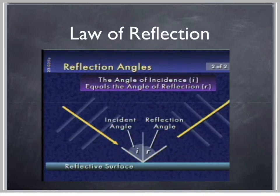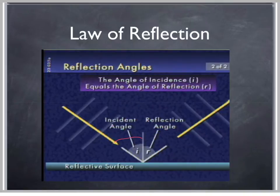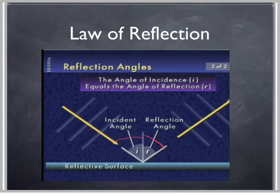We drew in the angle that the incident waves make with the normal, called the incident angle, labeled I. In the same way, we measured the angle that the reflected waves make with the normal, called the reflected angle. And so we got the law of reflection, which simply says that the angle of incidence equals the angle of reflection. We're going to see if light does that.